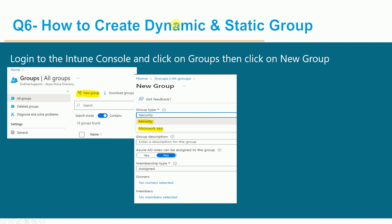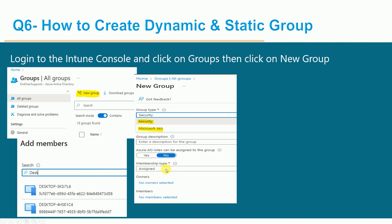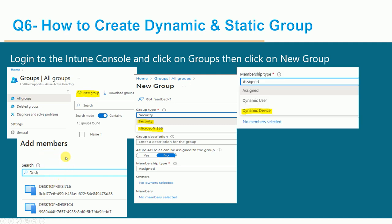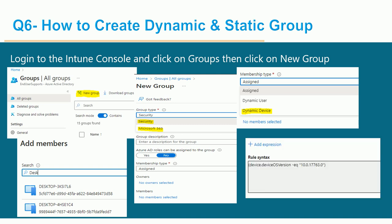For a static (assigned) group, once you click Assigned and select the membership type, you will get a screen to search and add devices as direct members. If you selected Dynamic Device, you need to write a KQL query. For example, a query like device.version can be used to filter devices by a specific Windows version or any OS version. Based on the version, it will detect and dynamically populate the group.